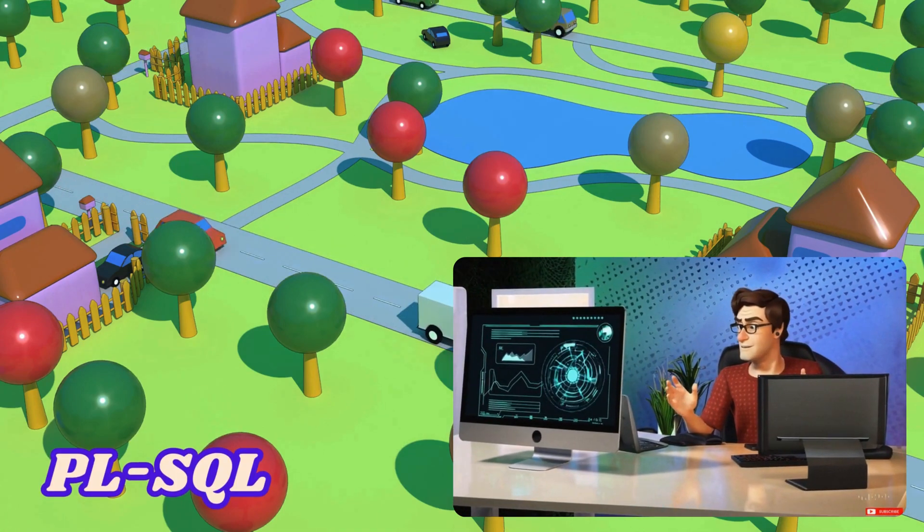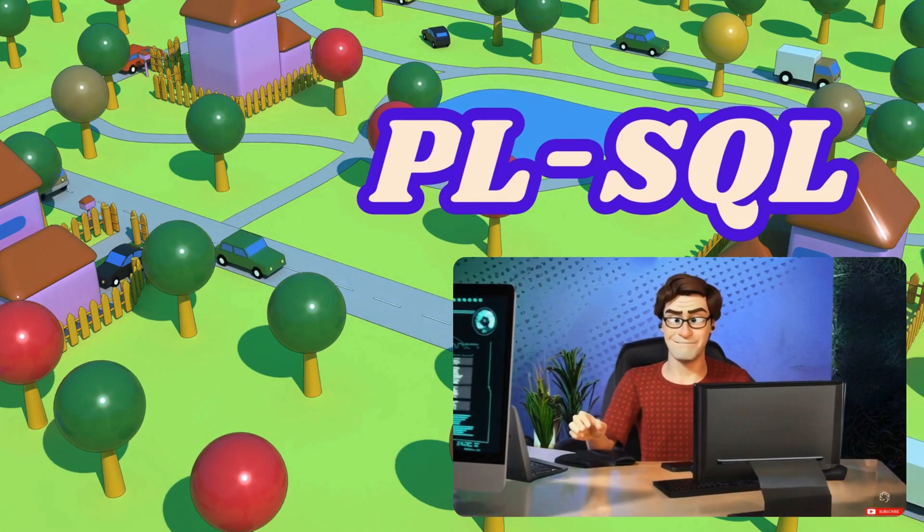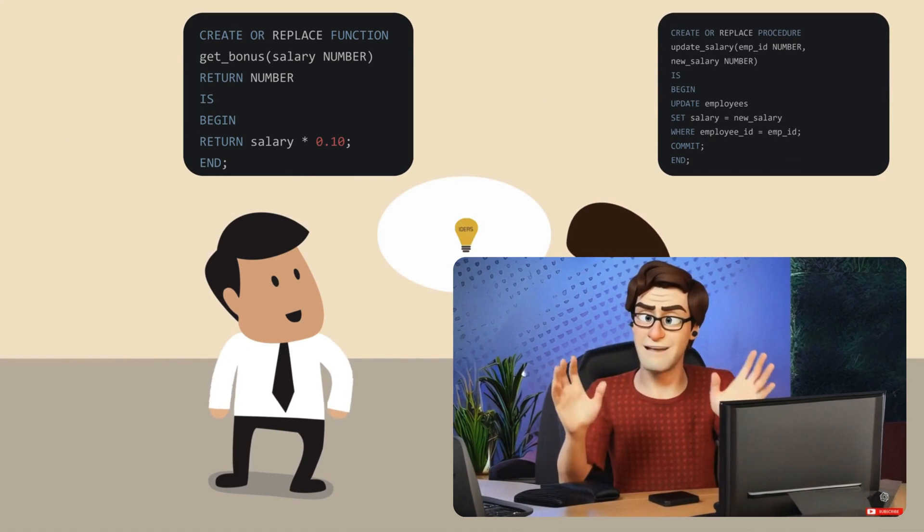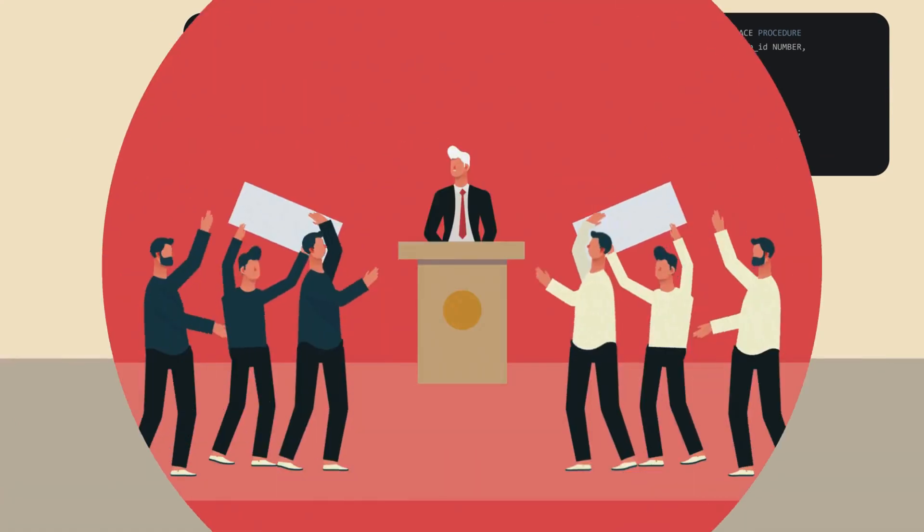Once upon a time in a small village called PL Sequel Town, there lived two helpful friends named Function and Procedure. Every day the villagers came to them with different needs.